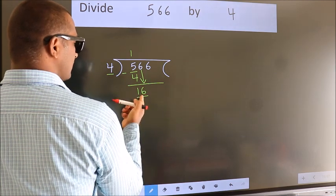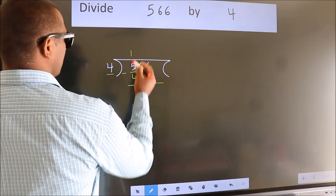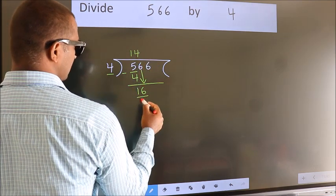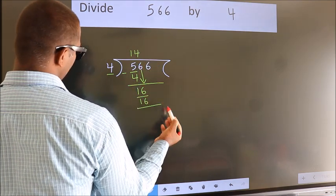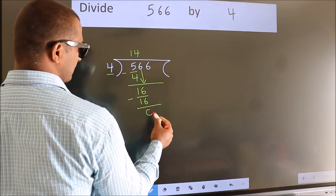When do we get 16? In 4 table. 4 4s, 16. Now, we subtract. We get 0.